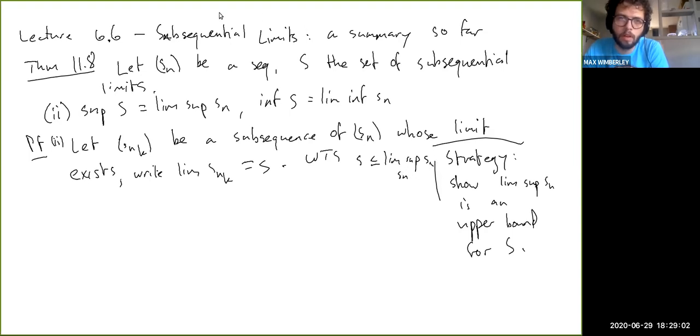so we want to show S is less than or equal to lim sup Sn. So how are we going to do this? Well, we will show that the lim sup Snk is less than or equal to the lim sup Sn. And here we're going to use the same trick that we did before,